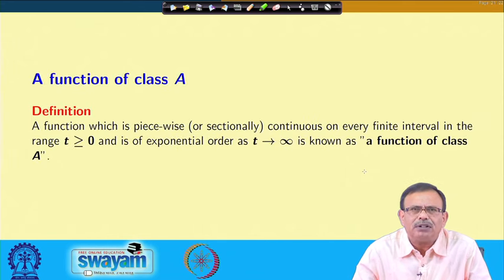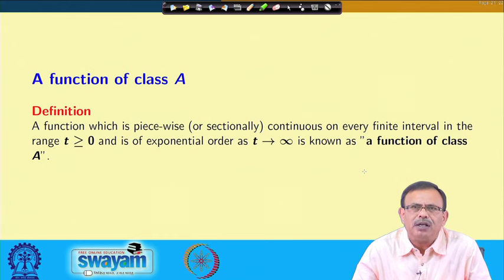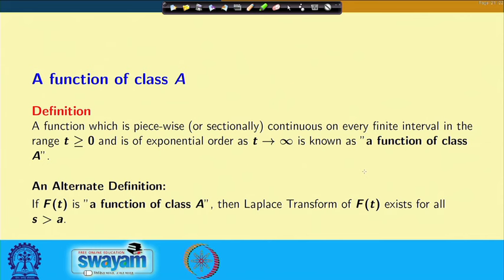A general definition: a function of class A is a function which is piecewise continuous on every finite interval in the range t greater than 0 and is of exponential order as t approaches infinity. If a function is of class A, then the Laplace transform of f(t) exists for all s greater than a, because the function is of exponential order.